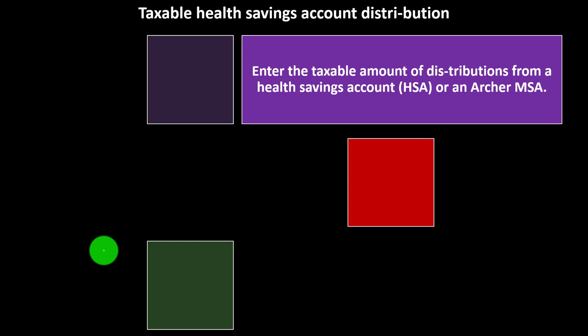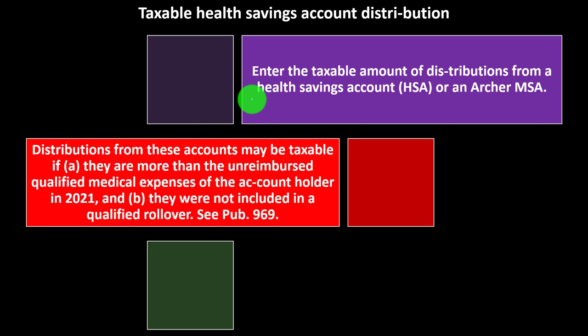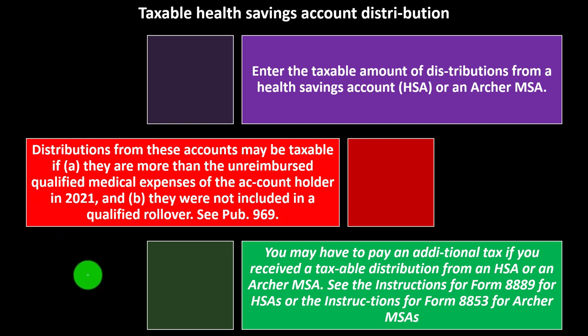Taxable health savings account distributions: enter the taxable amount of distributions from an HSA or an Archer MSA. Distributions are taxable if they exceed unreimbursed qualified medical expenses of the account holder in 2021 and were not included in a qualified rollover. See Publication 969 for HSA details. If you received a taxable distribution, see Form 8889 instructions for HSAs or Form 8853 instructions for Archer MSAs, available at IRS.gov.